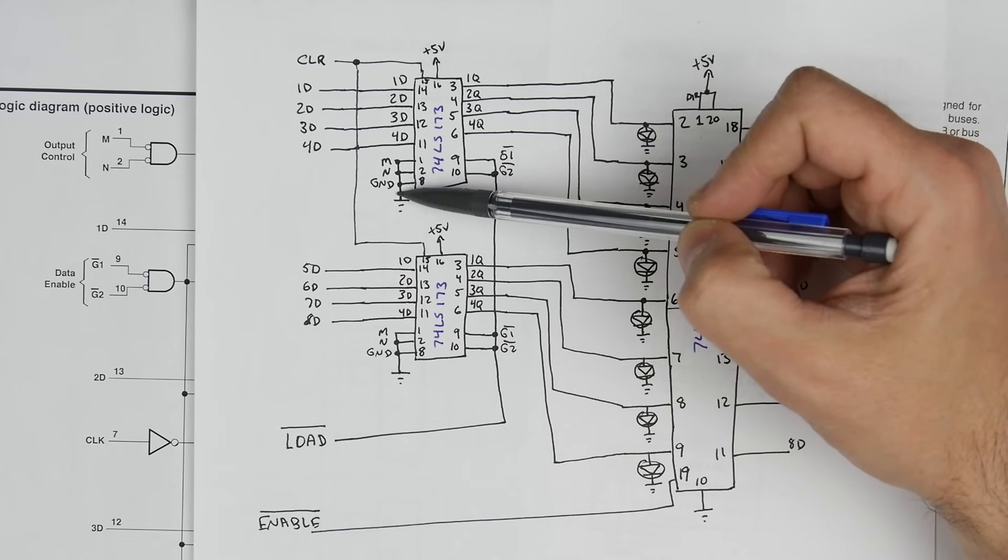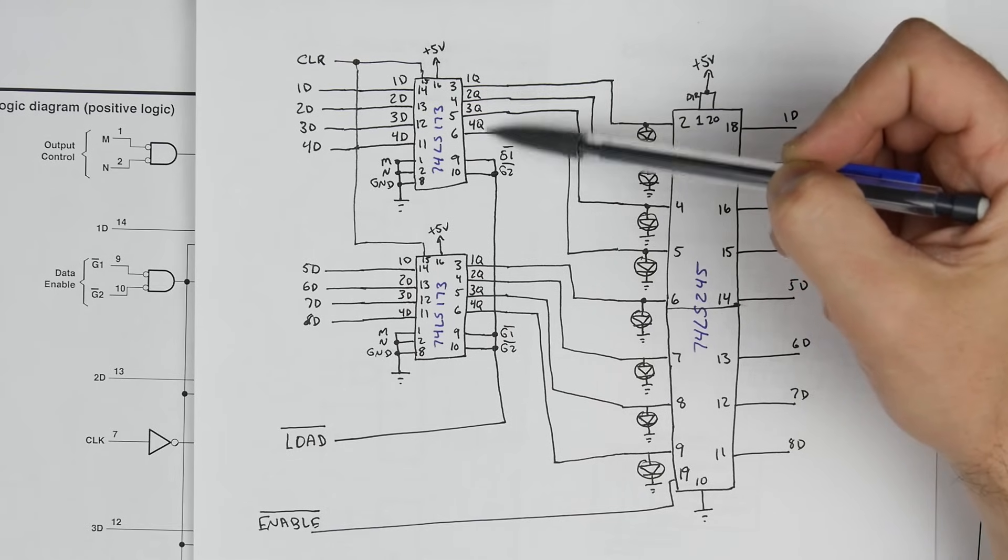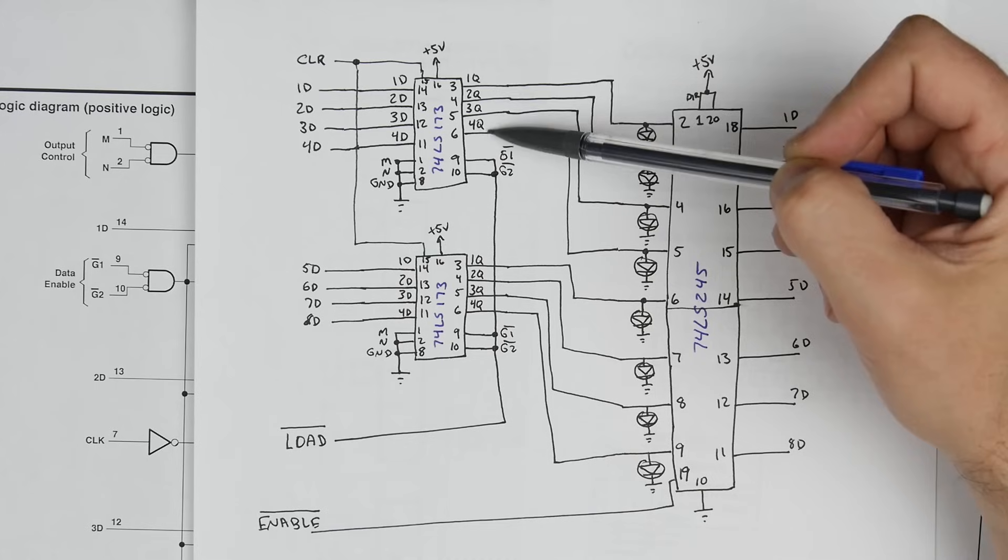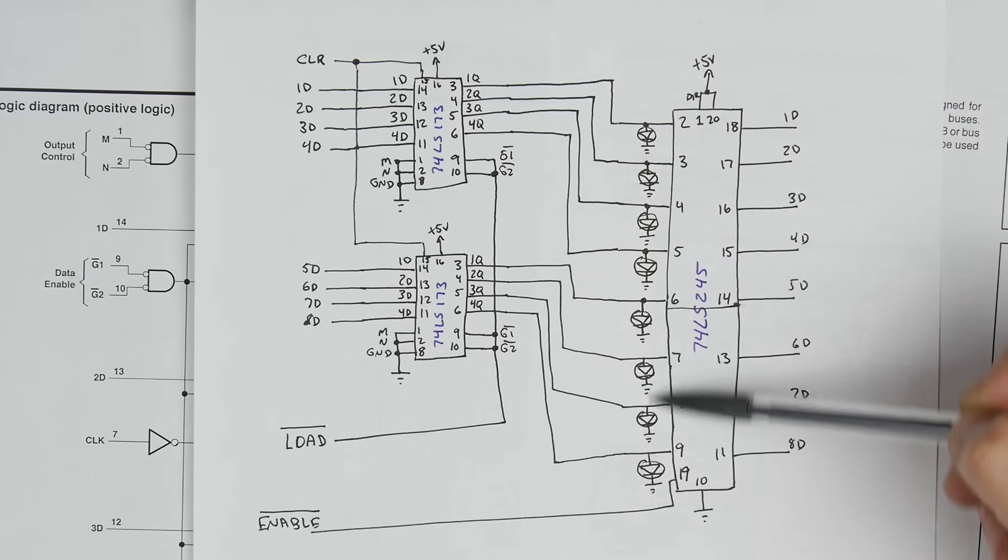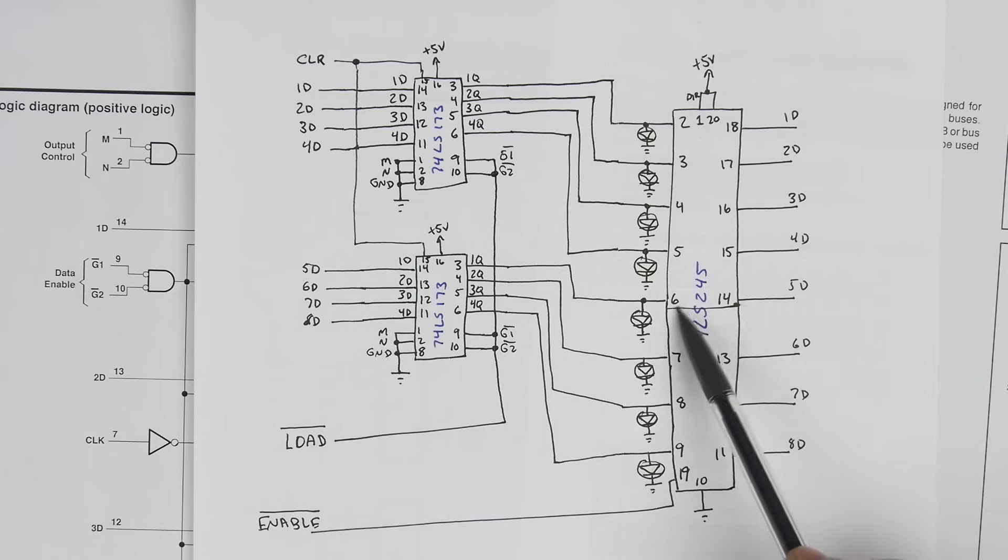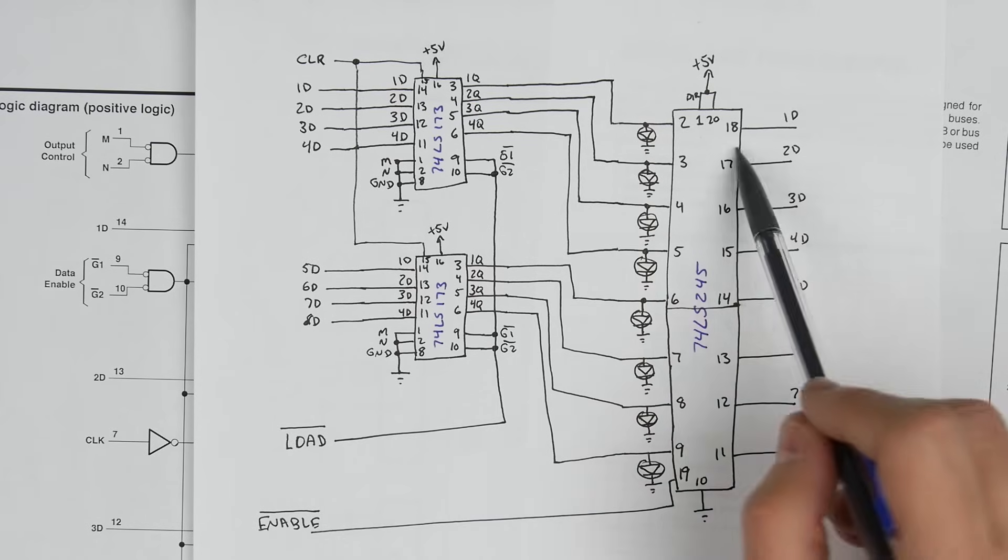But in any event, if you tie both of them to ground, then the output will always be on. And so these will always be outputting, which is what we want. And then I have the eight LEDs hooked up so we can see what's stored in these registers. So the output's always on, and you can always see on these LEDs what's actually stored in those registers.